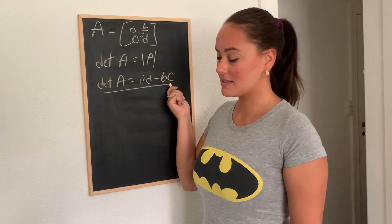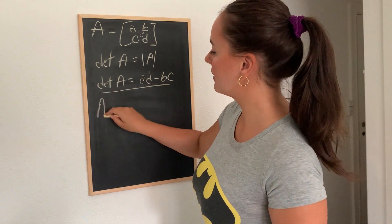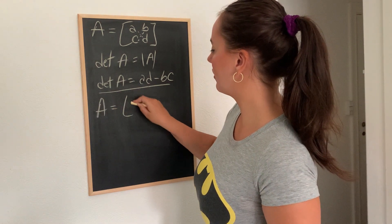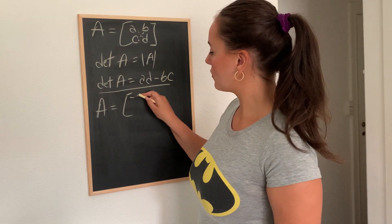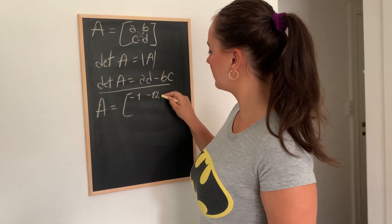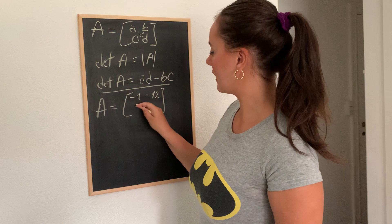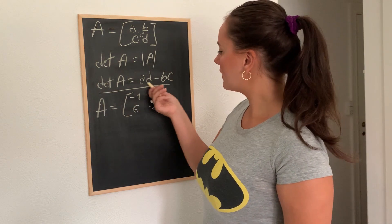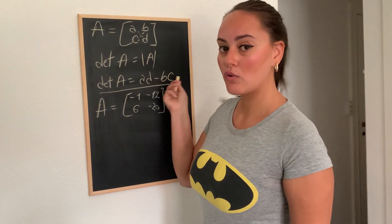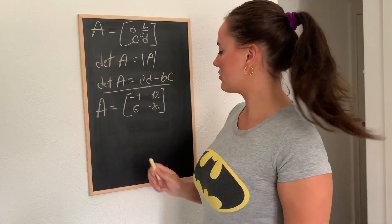Now that we know the formula, let's try to go through an example. Let's say we have matrix A with the elements minus 1, minus 12, 6, and minus 20.